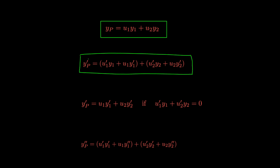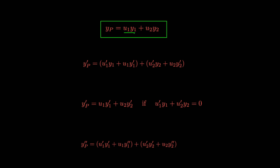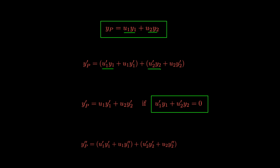Each term is differentiated using the product rule, giving us these two terms. Then we make a major assumption: the expression u1 prime times y1 plus u2 prime times y2 is equal to zero. If that's equal to zero, then the first derivative has a nice simple expression, and from that we can calculate the second derivative.